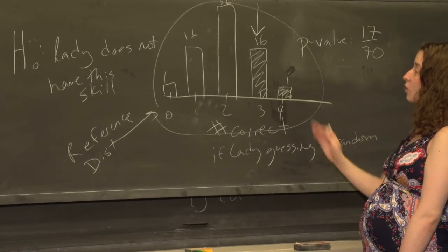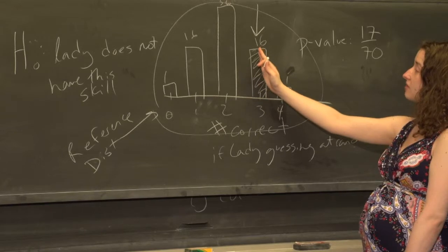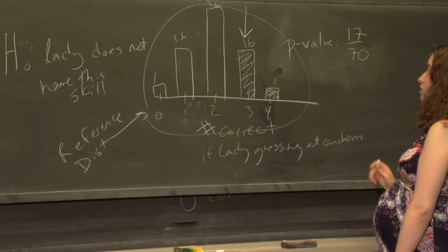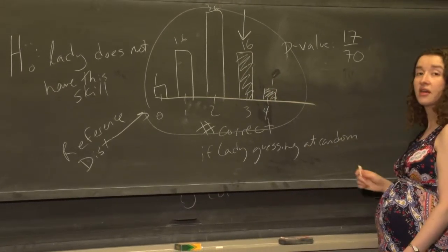We calculate that by saying, what's the probability we would have seen a value at least as big as we actually saw? And here that's 17 out of 70—that's called the p-value.